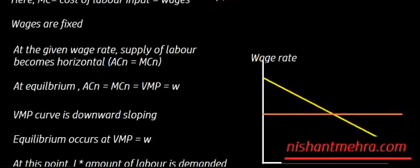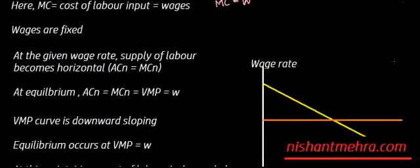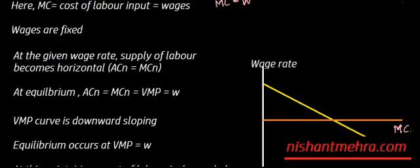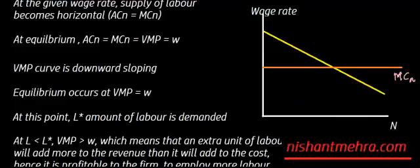At the given wage rate, how much labor can you supply? You can supply an infinite amount — whatever you want — because wages are fixed, neither increasing nor decreasing. So at this wage rate, the supply of labor becomes horizontal. That is your MCN curve. The VMP curve, on the other hand, is downward sloping.